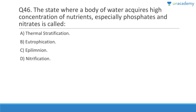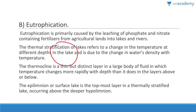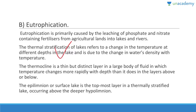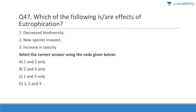Question 46: The state where a body of water requires high concentration of nutrients, especially phosphates and nitrates, is called eutrophication. It happens with lakes and ponds and is caused by leaching of phosphate- and nitrate-containing fertilizers from agricultural lands into lakes and water. Thermal stratification of a lake refers to a change in temperature at different depths due to changes in water density with temperature. Thermocline is a thin but distinct layer where temperature changes more rapidly with depth than in layers above or below.